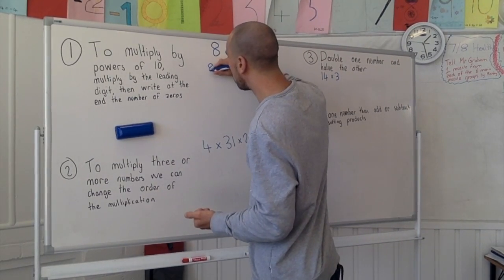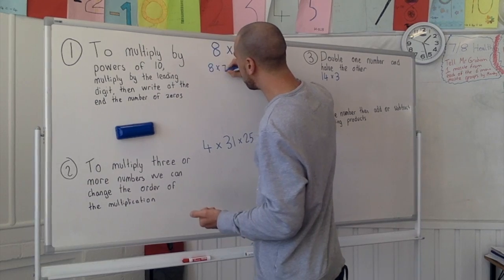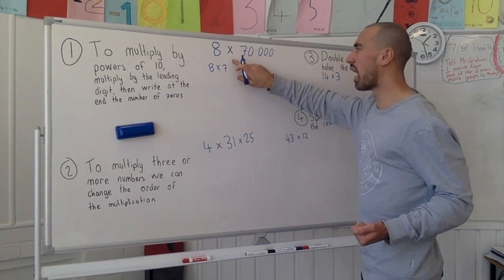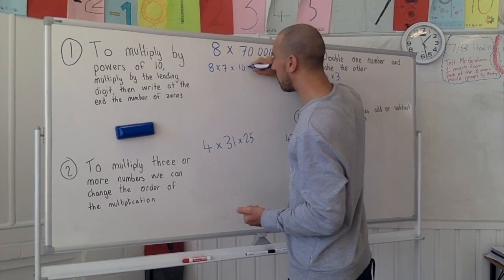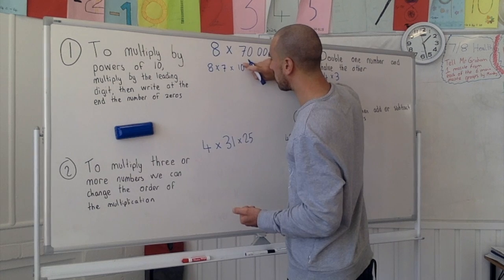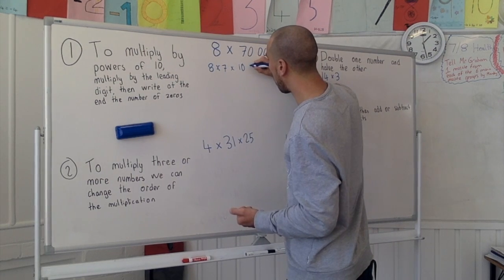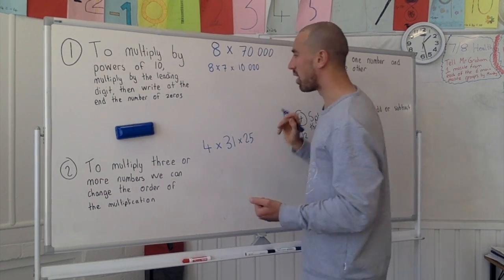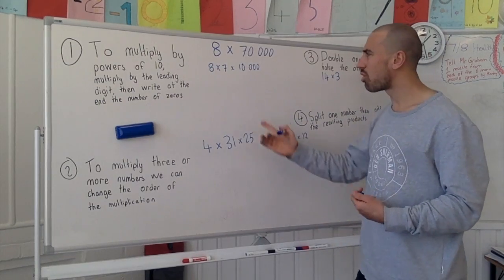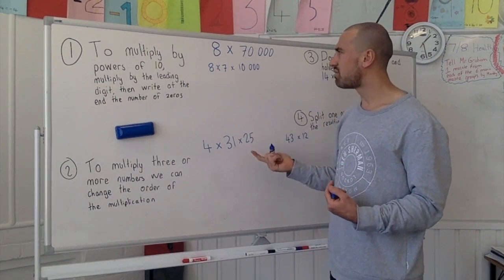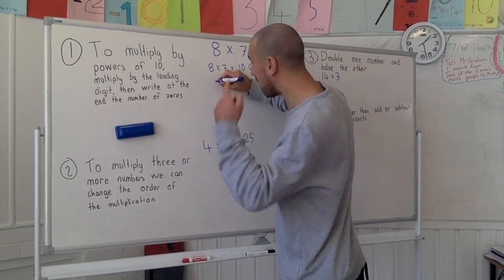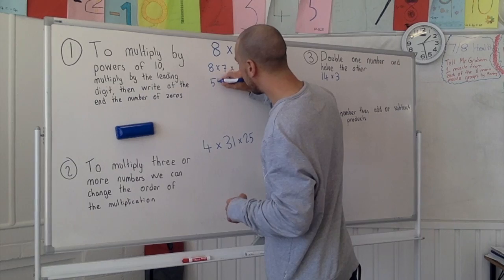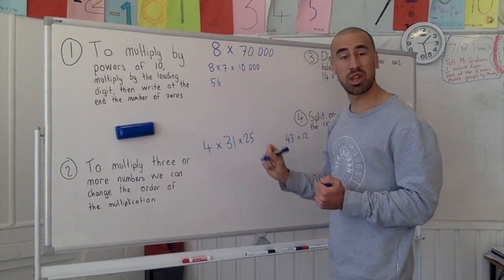8 times 7, and then we need to times that by 10,000. So that looks a lot more attractive to us than 8 times 70,000. So 8 times 7 we can do that in our head, hopefully. So that will give us 56. If we need to, we can work that out on a bit of paper, that's no worries there.